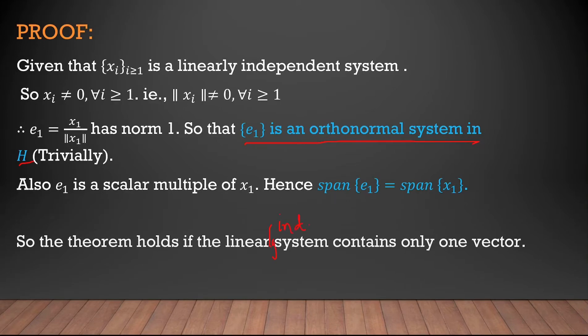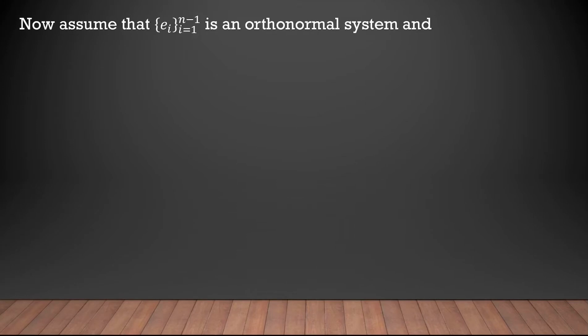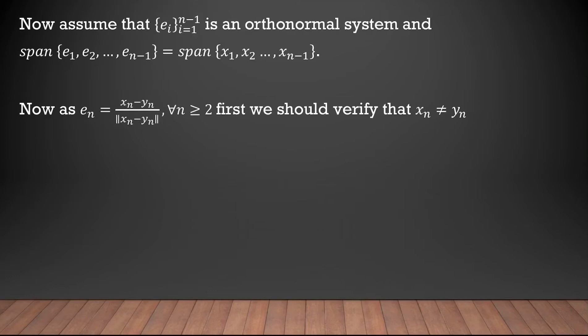The theorem holds when the linearly independent system contains only one vector. Now we assume the result is true for n−1 vectors: the collection {e_1, e_2, ..., e_{n-1}} is an orthonormal system and span{e_1, ..., e_{n-1}} = span{x_1, ..., x_{n-1}}.